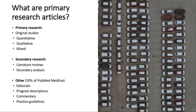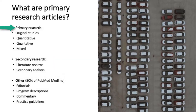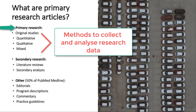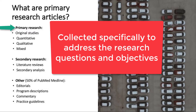The number of publications continues to grow. In approaching this ever-growing volume of articles, you can start by classifying them by type. So how do we tell them apart? Primary research publications describe original studies that use quantitative, qualitative, or mixed methods to collect and analyze research data. Primary studies are sometimes called field studies. In such studies, the research data must be original.